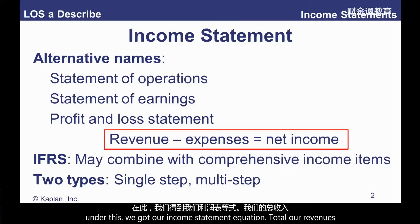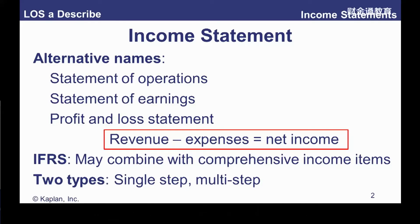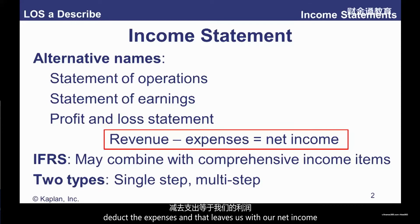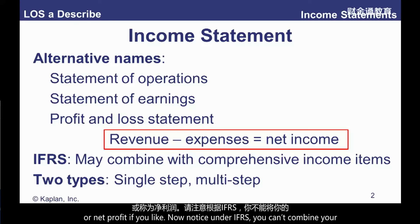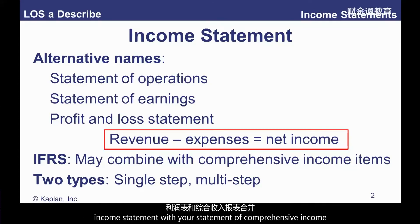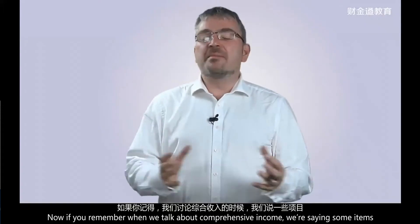Underneath that we've got our income statement equation: take our revenues, deduct the expenses, and that leaves us with our net income or net profit. Now notice under IFRS, you can combine your income statement with your statement of comprehensive income.